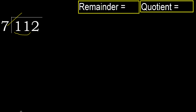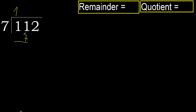But not greater. 7 multiplied by 2 is 14. 14 is greater. Multiplied by 1 is 7. 7 is not greater. 11 minus 7 is 4.